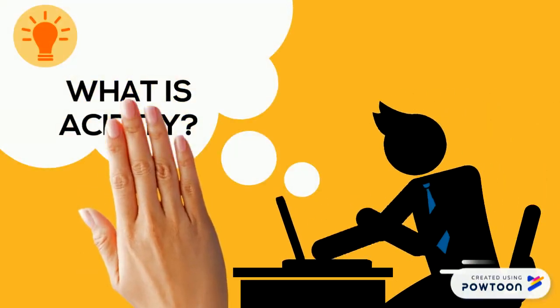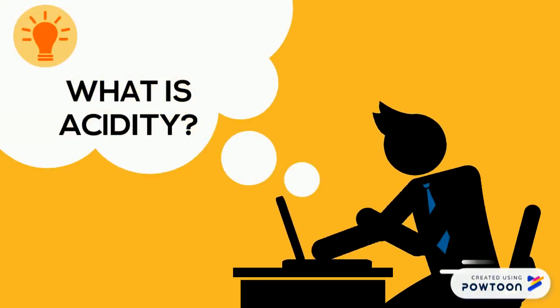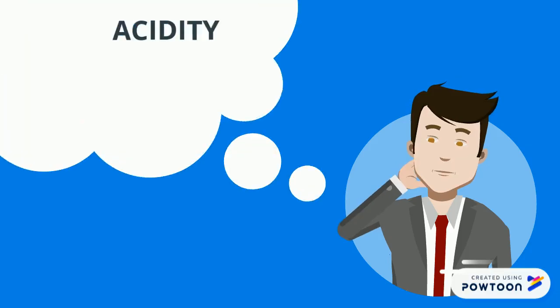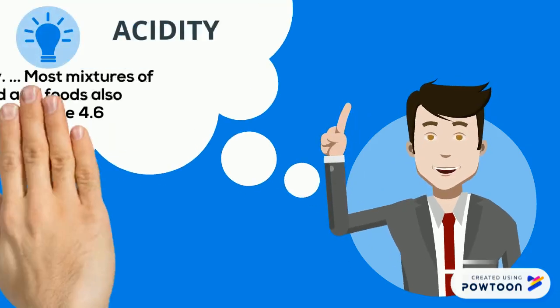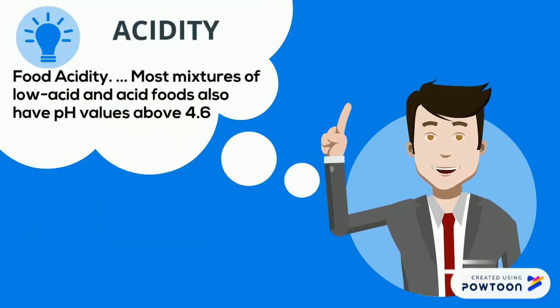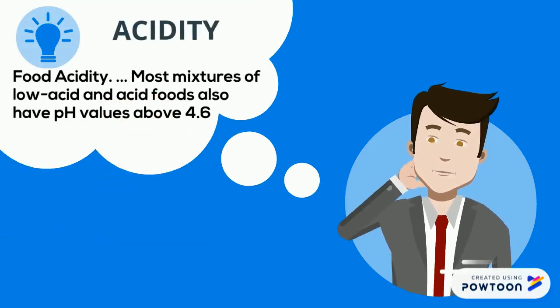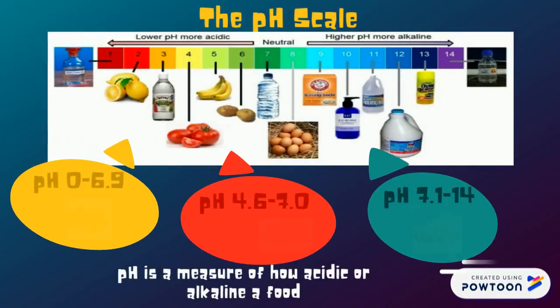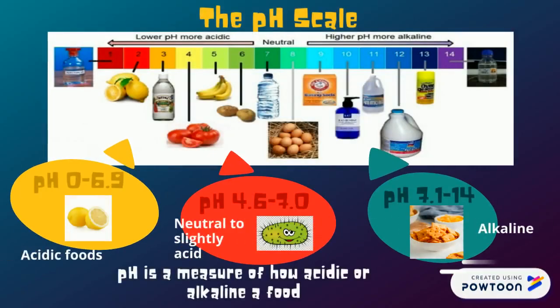What is acidity? Food acidity: most mixtures of low acid and acid food have a pH value above 4.6. Bacteria grow best at pH 4.6 to 7.0, which is neutral to slightly acidic.